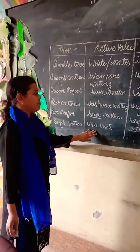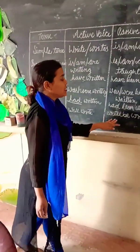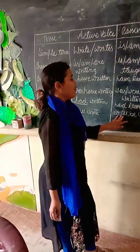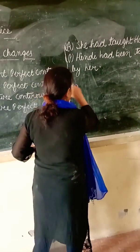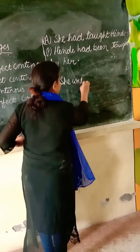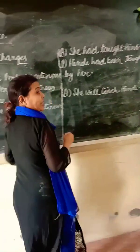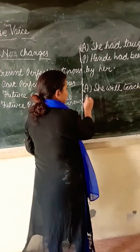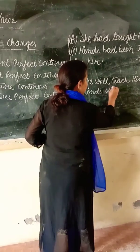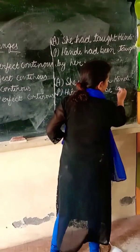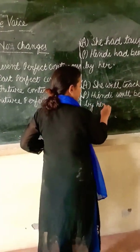Our next is simple future. In simple future, the formula is 'will' + verb first form. When we convert to passive, we use 'will be' + verb third form. Active voice: 'She will teach Hindi.' Converting to passive: 'Hindi will be taught by her.'